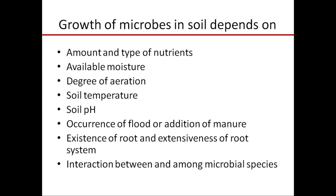Occurrence of flood or addition of manure also affects microbial populations. When there is a flood and waterlogging, anaerobic microbes will dominate in the flooded soil. Addition of manure, which is a rich source of nutrients and organic matter for microbes, causes the microbial concentration, density, and population to increase enormously.